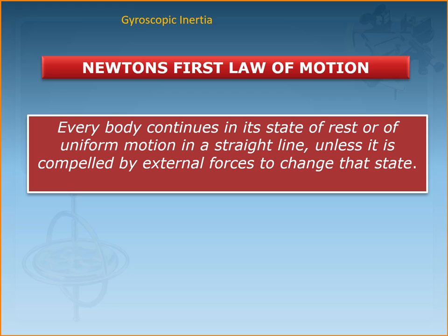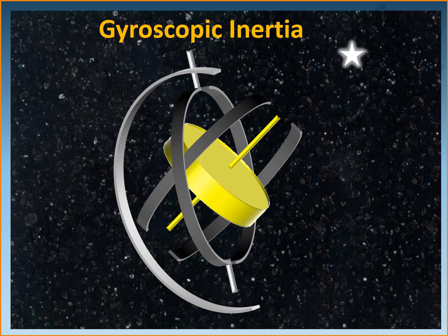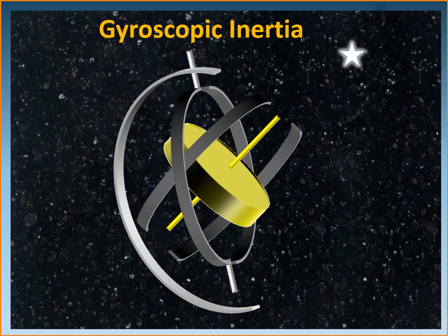Gyroscopic inertia is based on Newton's first law of motion, which states that everybody continues in its state of rest or of uniform motion in a straight line unless it is compelled by external forces to change that state. So how does that come into the concept of a gyroscope? A gyroscope is like a spinning top if you think about it.